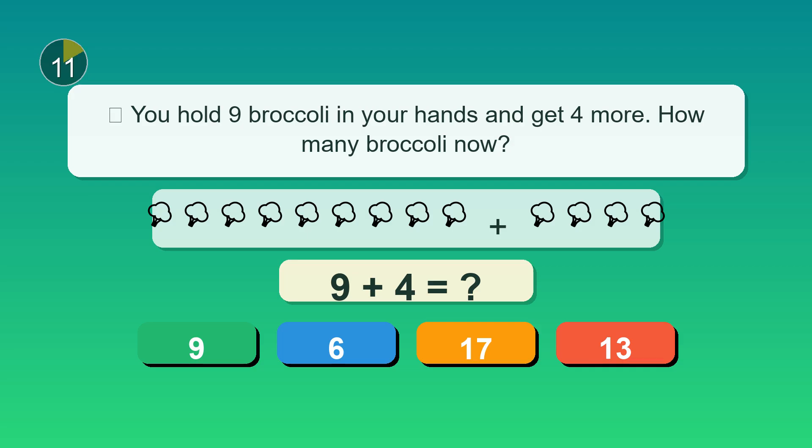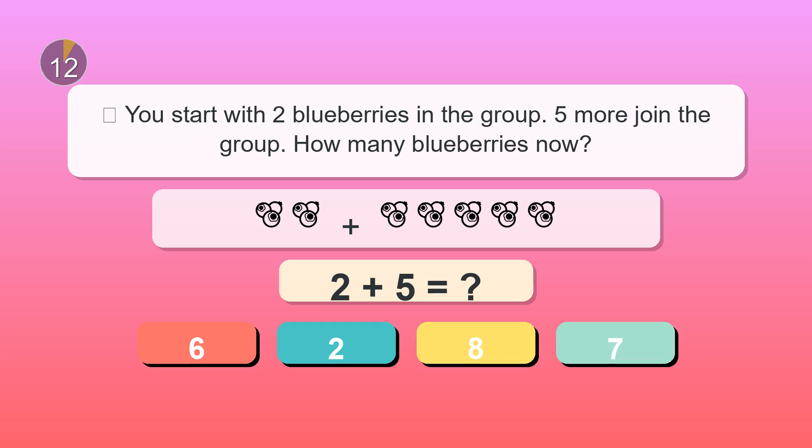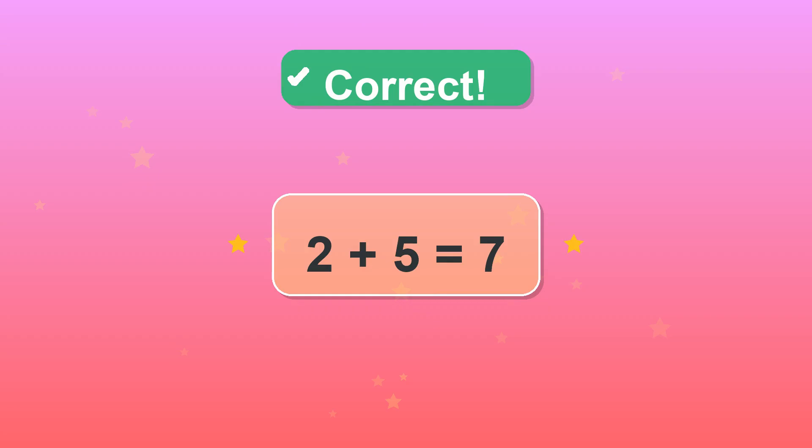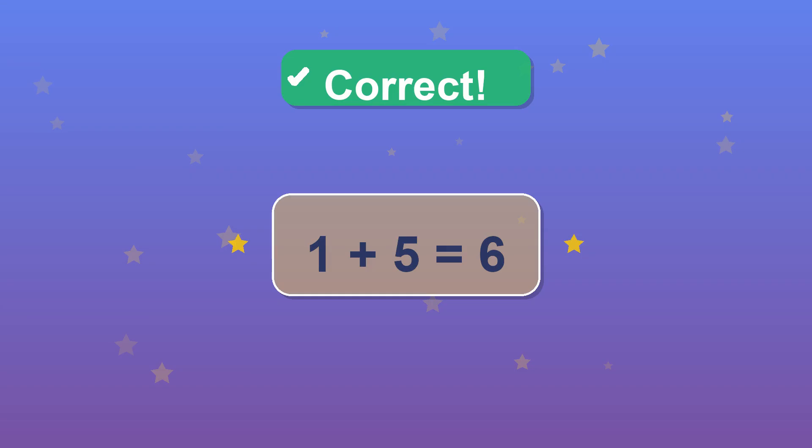You hold nine broccoli in your hands and get four more. How many broccoli now? You start with two blueberries in the group. Five more join the group. How many blueberries now? 7. Well spotted. You see one hedgehogs. Five more appear. How many hedgehogs now? 6. Good work.